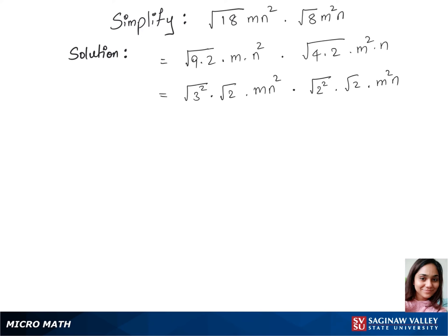Now in our next step, let's cancel out the square and square root. So that's 3 times root 2 times mn squared, times 2 times root 2 times m squared n.